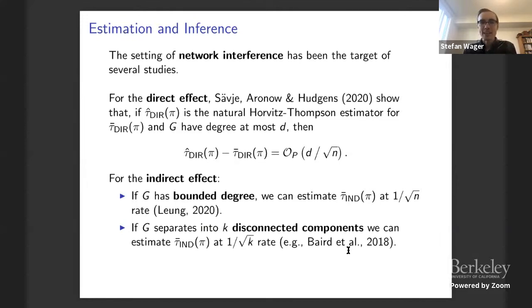This is a pretty popular model for doing interference in both statistics and econometrics. In the case of the direct effect, I mentioned the direct effect is the thing that in a randomized trial just becomes the average treatment effect we're used to estimating. Sävje, Aronow and Hudgens show that essentially, if you pretend that you have data from a randomized trial but you actually have interference, then you're going to end up estimating the direct effect. And they give some bounds on how fast you estimate the direct effect. This D depends on the degree of the graph. So they show that you're generally going to be consistent if you're not too dense, but the denser the graph, the worse your bounds get. And for the indirect effect, it's harder as you might expect, but there are still some results in specific models.